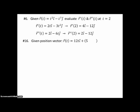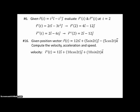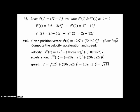Problem 16: given position vector r(t), compute velocity, acceleration, and speed. For velocity, take the derivative — that's fairly straightforward. For acceleration, take the derivative of the derivative; the i term goes to 0 because the derivative of 12 is 0, and don't forget to multiply by 2 using the chain rule. For speed, take the square root of the sum of squared velocity components: √(12² + (10 cos 2t)² + (10 sin 2t)²). The cos²2t + sin²2t simplifies to 1, giving √(144 + 100) = √244.